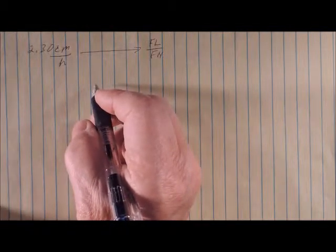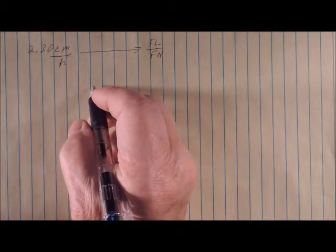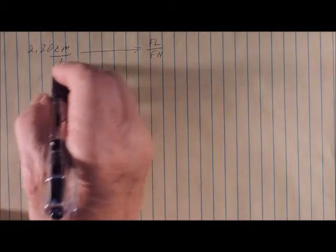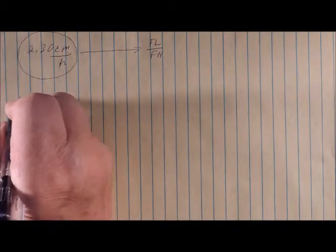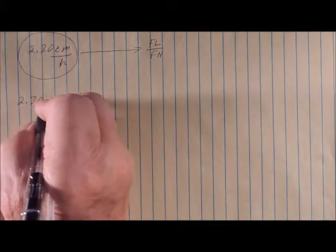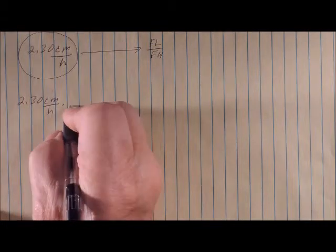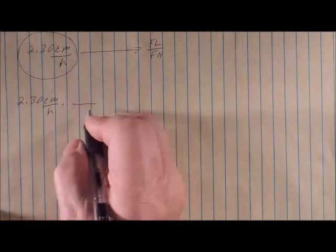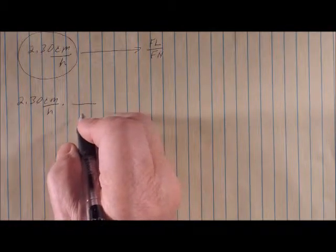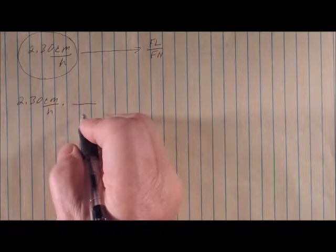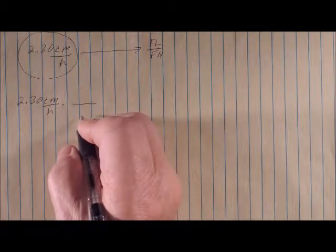We're going to start out by setting up the problem initially using the given value and its unit, which is 2.30 centimeters per hour. And I'm going to multiply that by a conversion factor. So I can set the first step up just like this. Always, without fail, it always works like this.